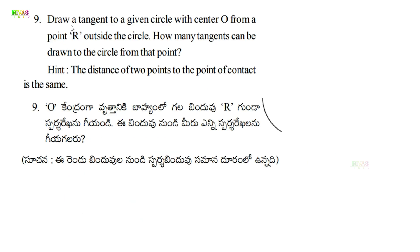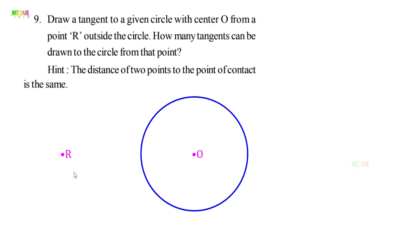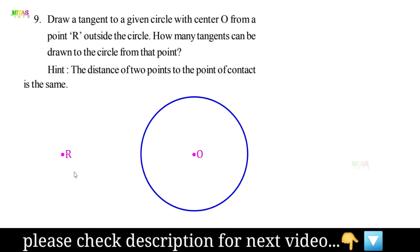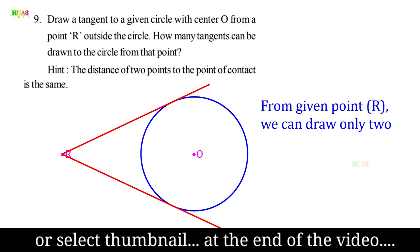Question number nine: Draw a tangent to a given circle with center O from a point R outside the circle. How many tangents can be drawn to the circle from that point? This is a simple question. From a given external point R, we can draw only two tangents. The distance from the external point to each point of contact is the same. This is the conclusion.